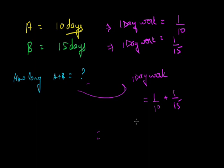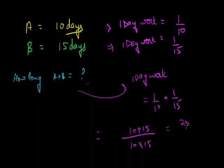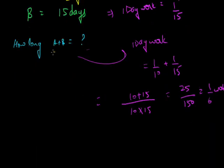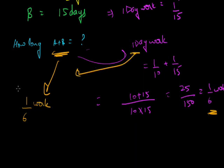We can take the LCM, which is 30, but we will instead use the product: 10 into 15 over 10 plus 15. I will tell you why I have done it this way instead of taking LCM. That gives 25 upon 150, which is 1/6. So A and B combined do 1/6 of the work in one day. Therefore, the total work will be done in 6 days — A and B working together will finish the work in 6 days.